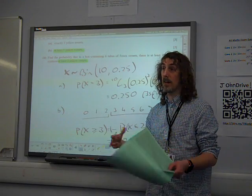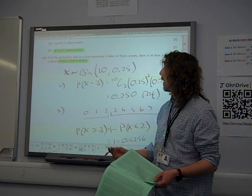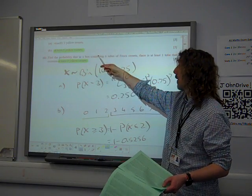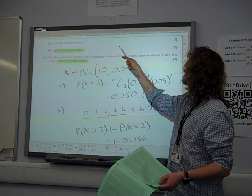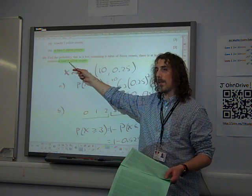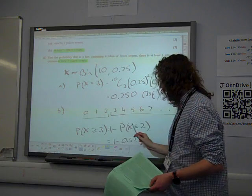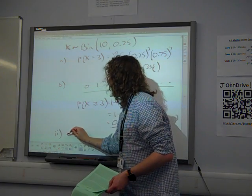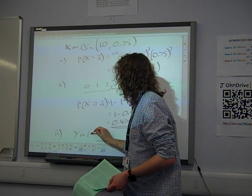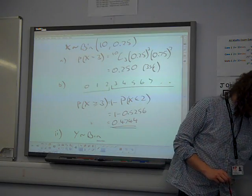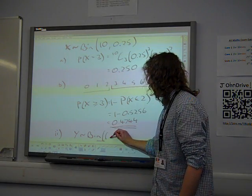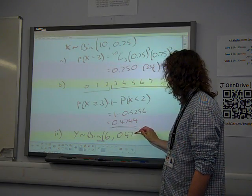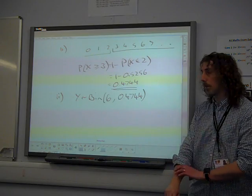So we've now got another binomial distribution, a new binomial distribution. It's about the number of tubes, the number of boxes, no hang on, the number of tubes in a box, where there's at least one that have this success. So I set this up with a new letter, I use the letter Y. Y is a binomial distribution as well. There are six trials, the six tubes in the box, and the probability of a success now is whatever answer you had for part B.